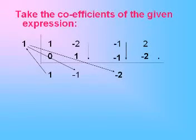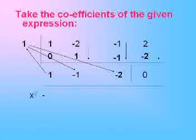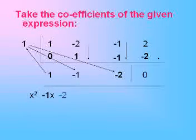So add now 2 and minus 2, that gives you 0. So the remaining expression is a quadratic expression. It is x square minus x minus 2.